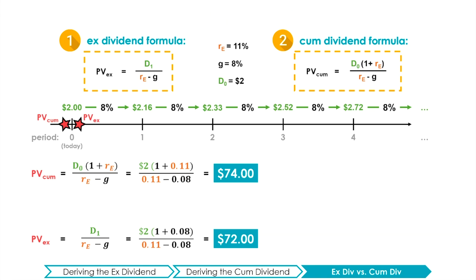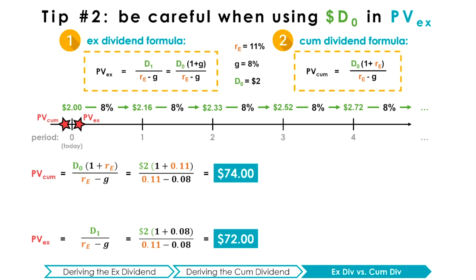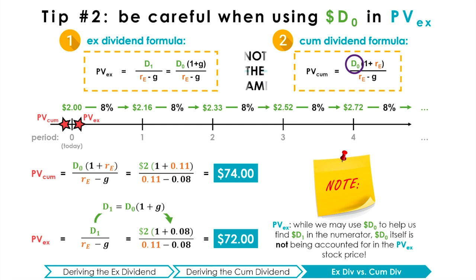This example leads to a second tip. Many students get confused between using D0 to calculate the ex-dividend stock price versus the cum-dividend stock price. The key thing to remember is that while we may use D0 to help find D1 — the numerator of the ex-dividend stock price — D0 itself is not being accounted for in the ex-dividend stock price. With the cum-dividend stock price, D0 is actually being accounted for. Keeping this distinction clear is crucial to avoiding confusion between the two formulas, which, although conceptually similar, represent two different applications.